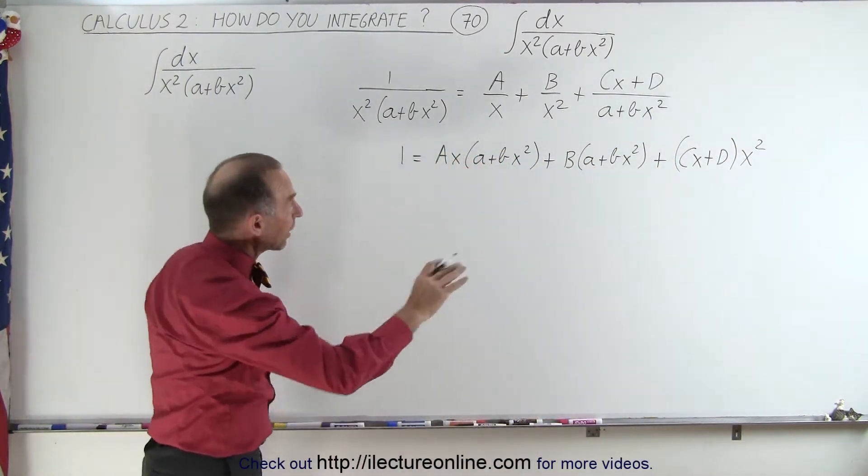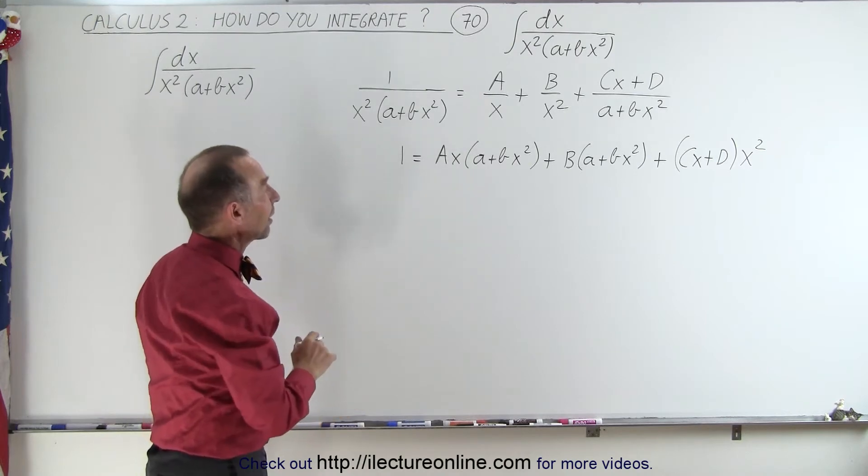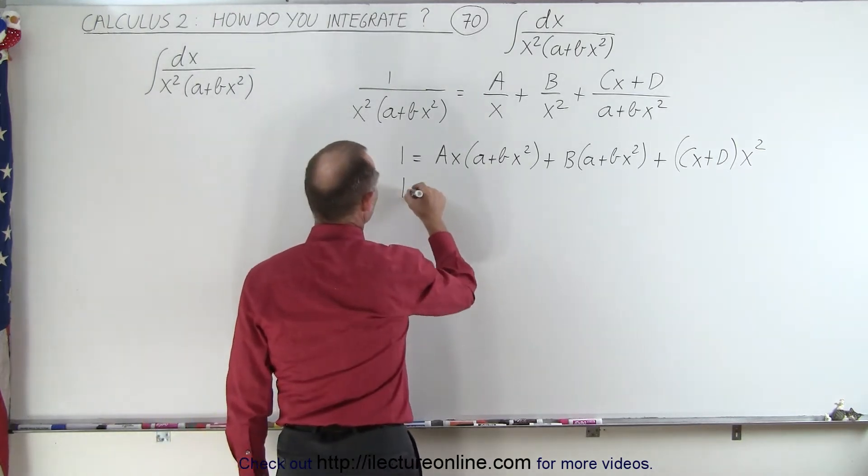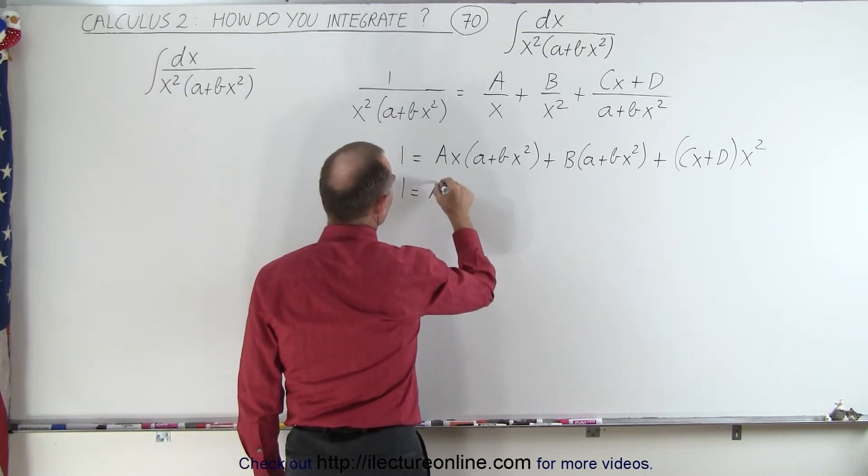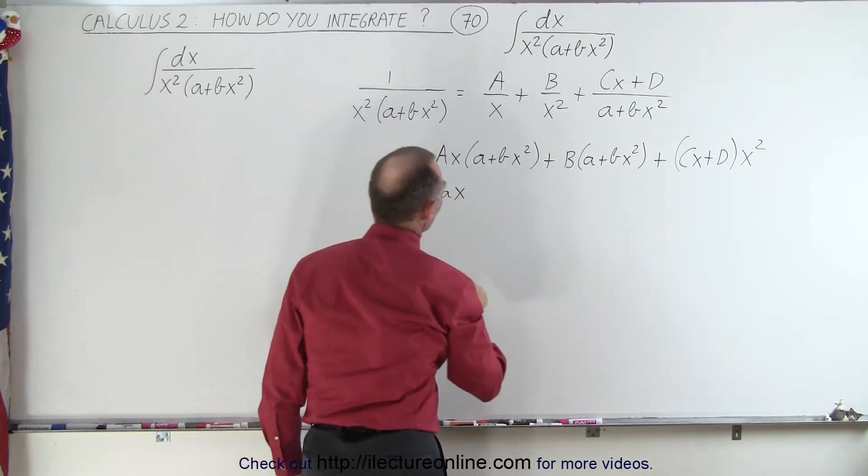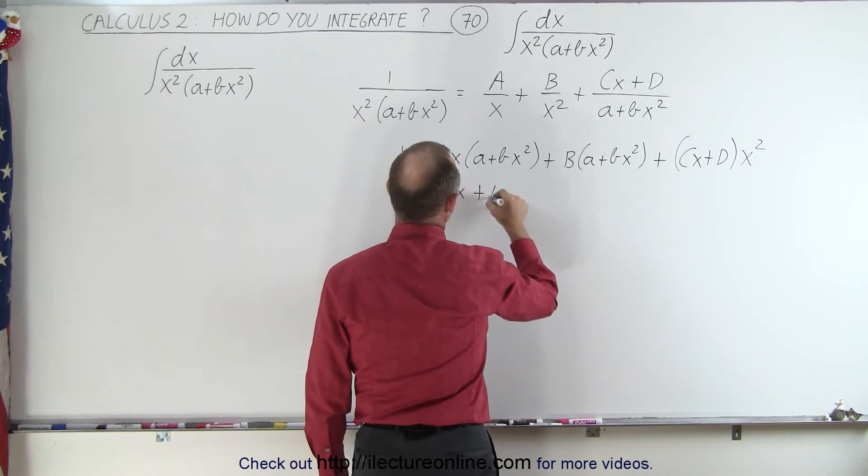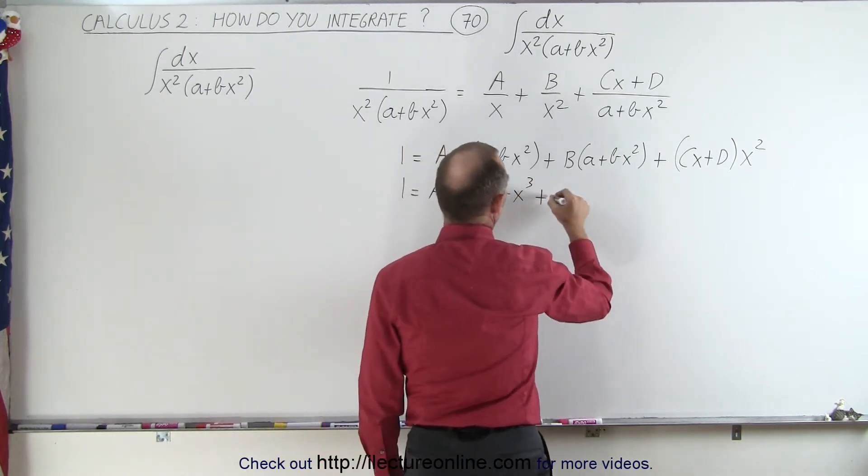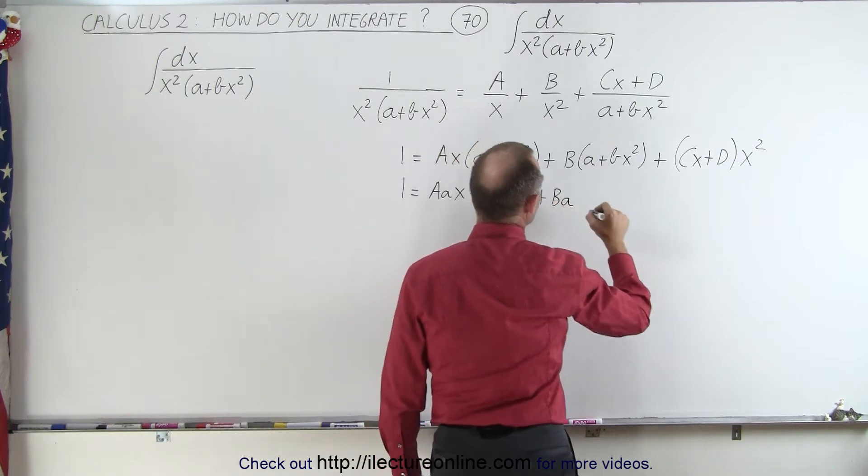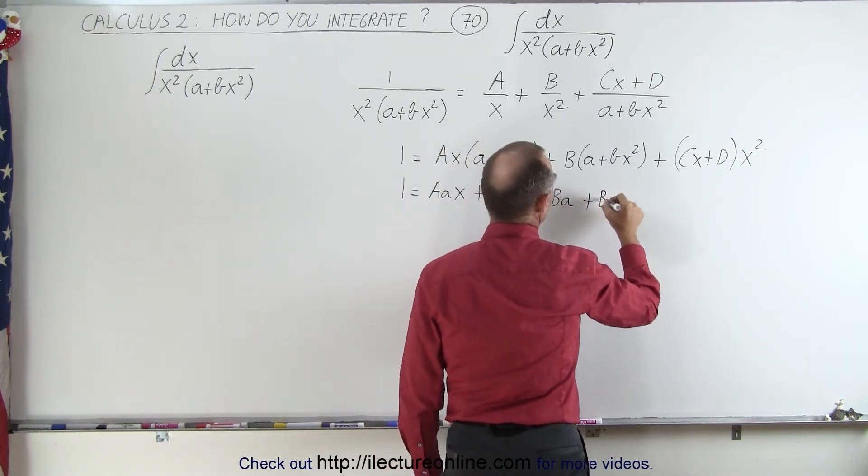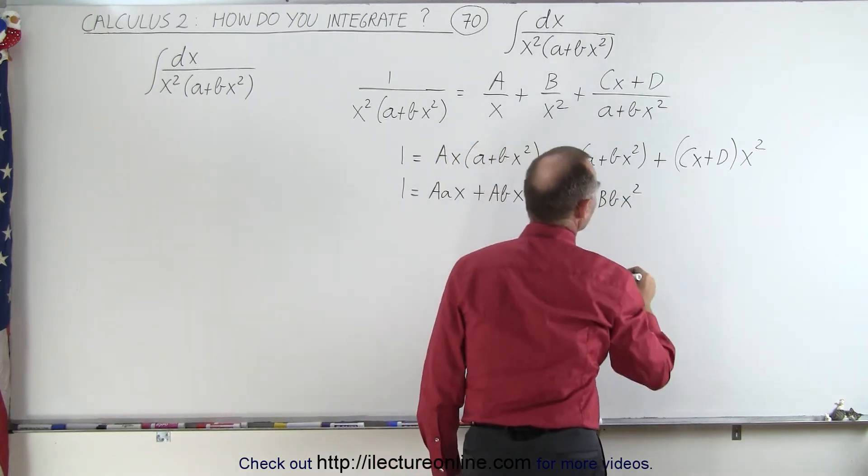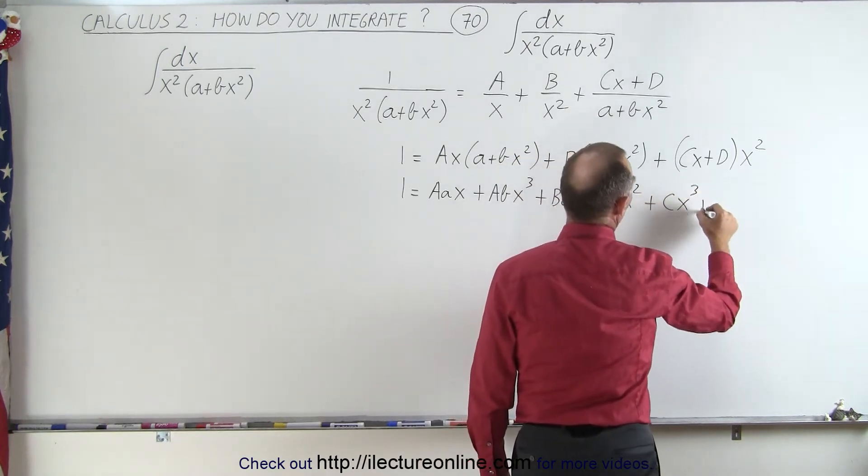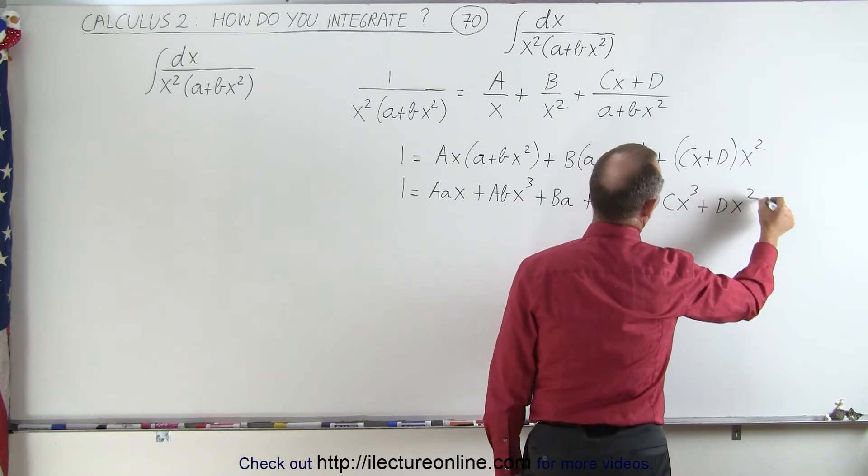And now we're going to multiply all that out on the right side and try to figure out what a, b, c, and d are equal to. So we have 1 is equal to Ax plus a times bx cubed plus Ba plus B times bx squared